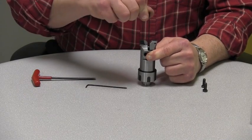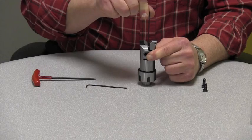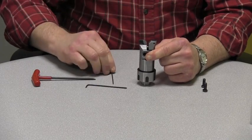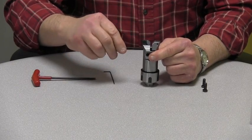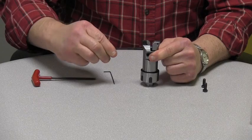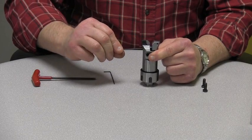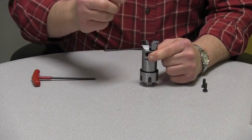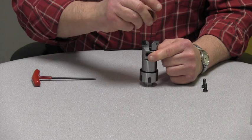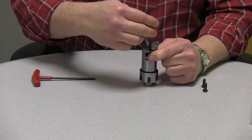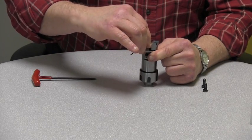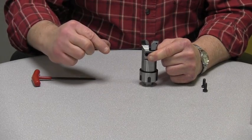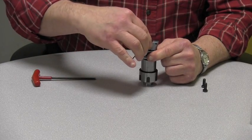Tighten that set screw back up, rotating slightly to where you can tighten up the next one. You want to tighten up all three set screws that are located on the centering ring.